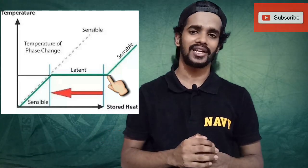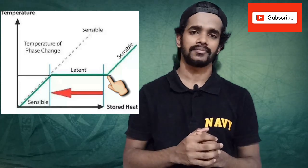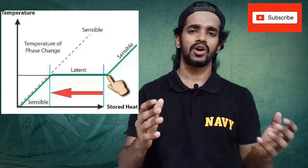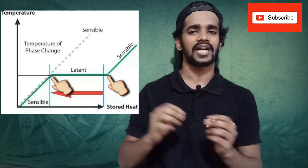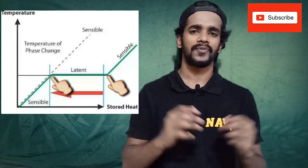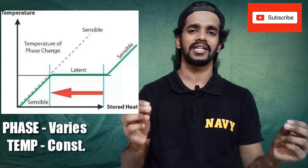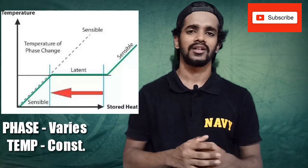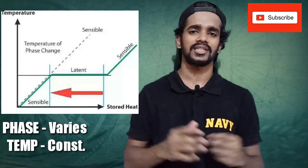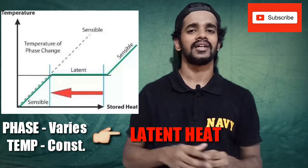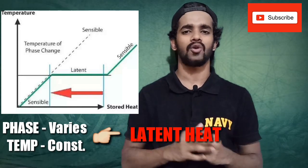Now the water is at 0 degrees Celsius. If you again cool down the water, the water will change to ice. The liquid phase will be transformed to solid phase, but there is no dip in temperature — the temperature is still 0 degrees Celsius. This particular process is known as latent heat: there is a change of phase from liquid to solid but the temperature remains constant.